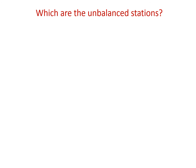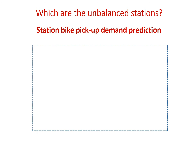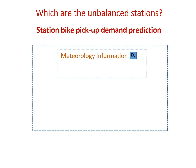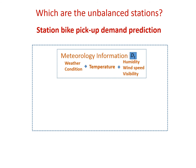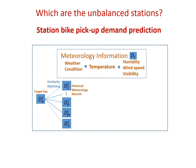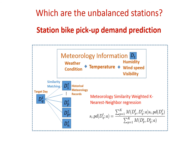To estimate the bike pickup demand, we collect a set of meteorology information, including weather condition, temperature, humidity, wind speed, and visibility. Given our target day and its meteorology report, we search the top K most similar records from its historical meteorology reports. The pickup demand is then estimated by our meteorology similarity weighted K nearest neighborhood regression.